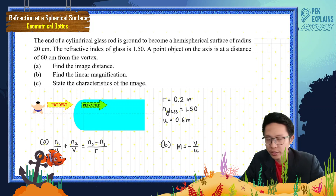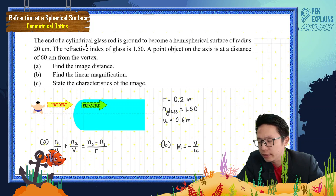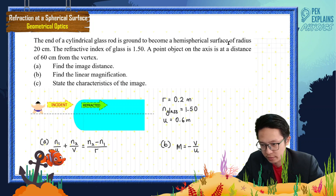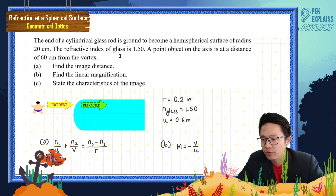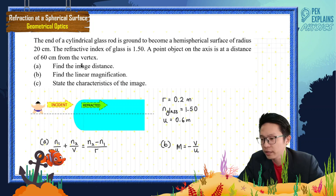Here's a question on refractions at a spherical surface. Let's read this together. The end of a cylindrical glass rod is ground to become a hemispherical surface of radius 20 cm. The refractive index of glass is 1.5. A point object on the axis is at a distance of 60 cm from the vertex. Find the image distance, find the linear magnification, and state the characteristics of the image formed.